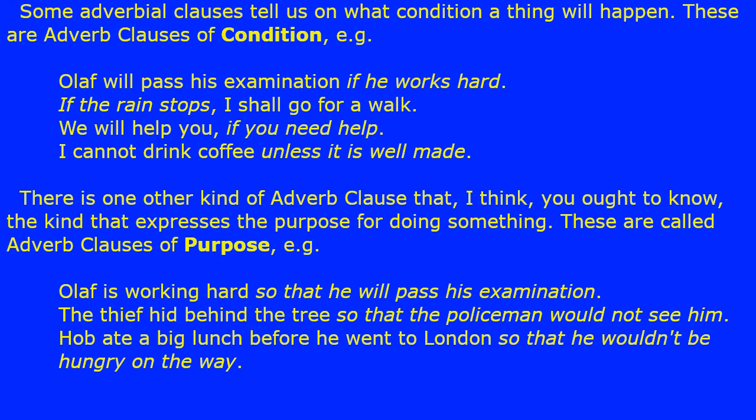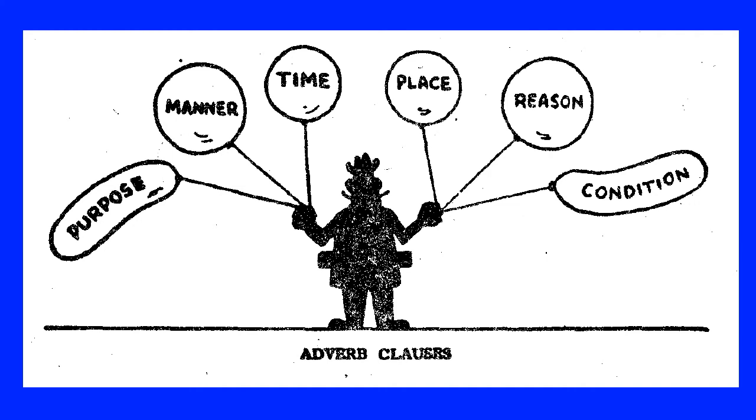There is one other kind of adverb clause that you ought to know — the kind that expresses the purpose for doing something. These are called adverb clauses of purpose. For example: Olaf is working hard so that he will pass his examination; the thief hid behind the trees so that the policeman would not see him; Hob ate a big lunch before he went to London so that he wouldn't be hungry on the way. Adverb clauses: purpose, manner, time, place, reason, condition.